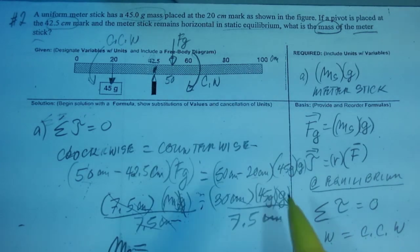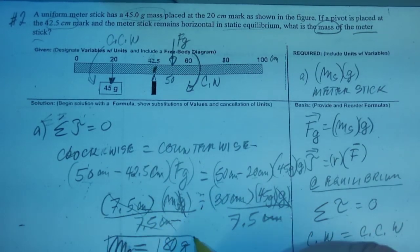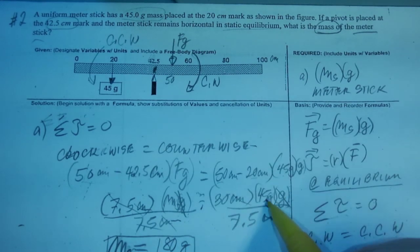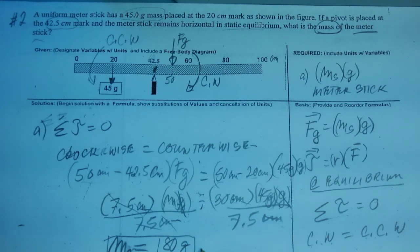So the meter stick weighs 180 grams. Okay, and again, the units here is this one, right? That's all that's left. We have canceled G, which is the acceleration due to gravity. And we've also canceled centimeter here. Check.